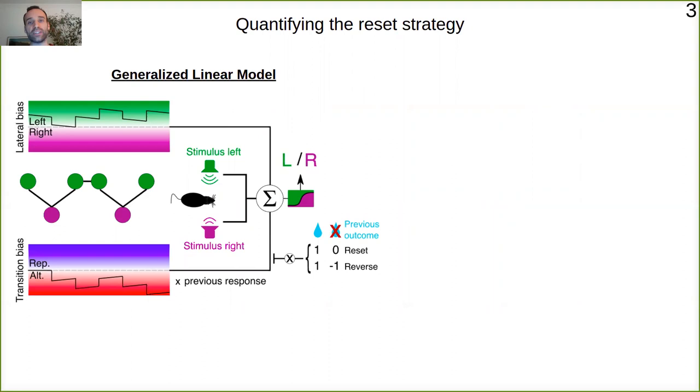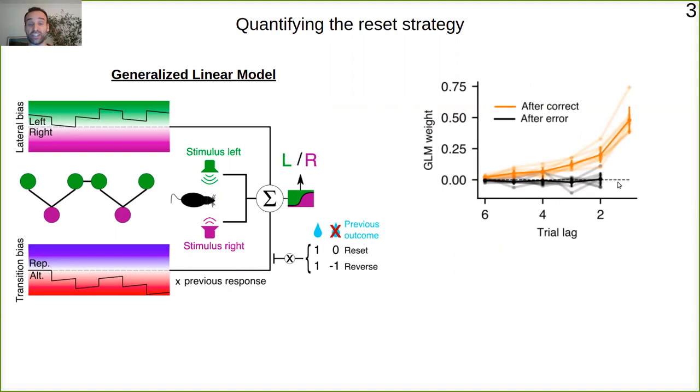The first thing we did was to quantify properly this reset strategy. We used a generalized linear model to quantify the contributions of different relevant factors of the task. Here I'm showing the contributions of the transition regressor after correct trials and after error trials. You can see that after correct trials the transition history contributes quite a lot to the decision of the rat, but after error trials this contribution vanishes.